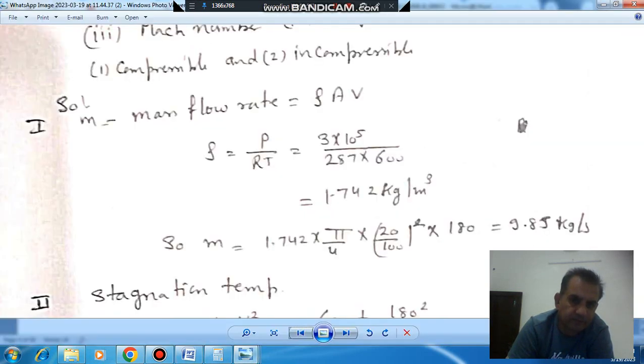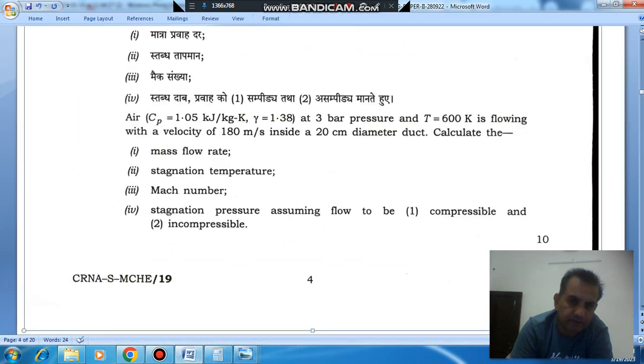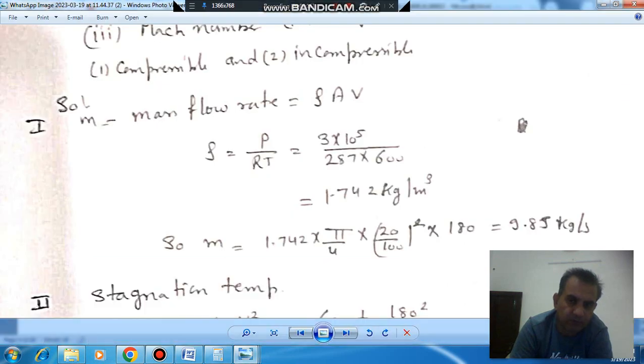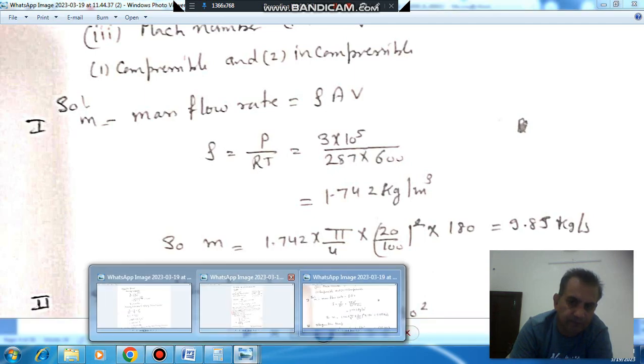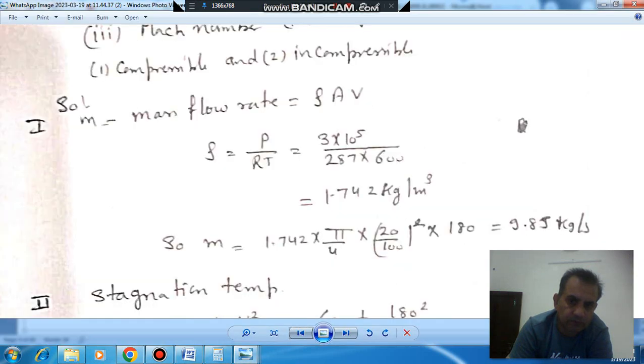First of all, mass flow rate is rho A V, and rho is density. Pressure is given and temperature is given, so density is P by RT. So P is 3 bar divided by, R is 287, divided by temperature is 600. So that will be 1.742 kilograms per meter cubed. And area of a duct with diameter 20 centimeters is pi times 20 by 100 squared. Velocity is given as 180 meters per second. So mass flow rate will be 9.83 kilograms per second.